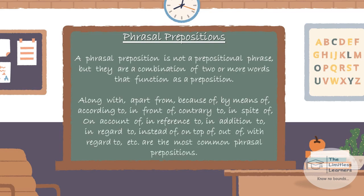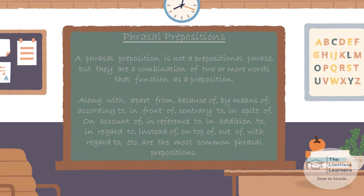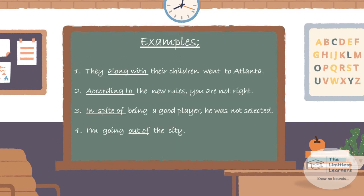Phrasal prepositions are not prepositional phrases; they are a combination of two or more words that function as a preposition. Examples include: along with, apart from, because of, by means of, according to, in front of, contrary to, in spite of, on top of, in reference to, in addition to, in regard to, instead of, out of, with regard to, etc. Examples: 'They, along with their children, went to Atlanta.' 'According to the new rules, you are not right.' 'In spite of being a good player, he was not selected.' 'I am going out of the city.' All the underlined words on your screen are phrasal prepositions.